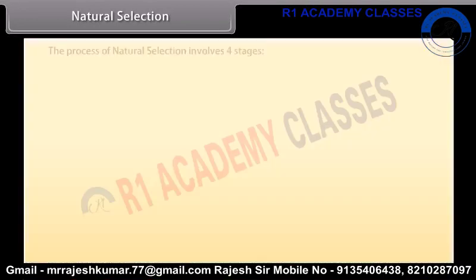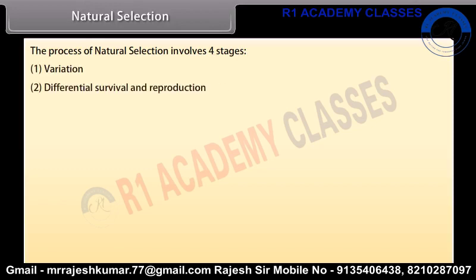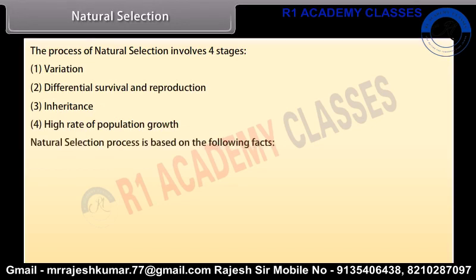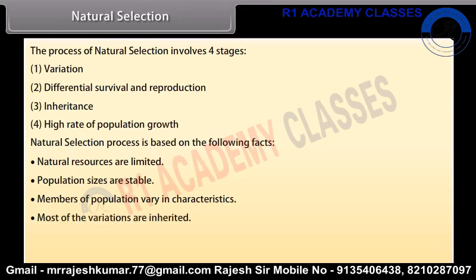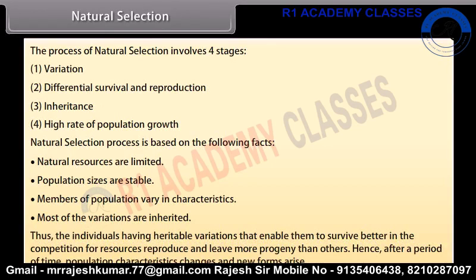Natural selection involves four stages: variation, differential survival and reproduction, inheritance, and high rate of population growth. It is based on the following facts: natural resources are limited, population sizes are stable, members of a population vary in characteristics, and most variations are inherited. Thus, individuals having heritable variations that enable them to survive better reproduce and leave more progeny. After a period of time, population characteristics change and new forms arise.